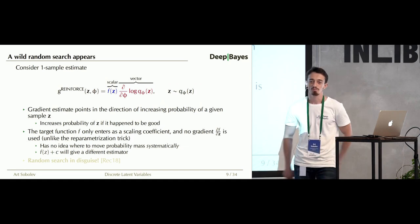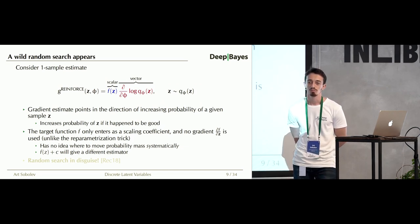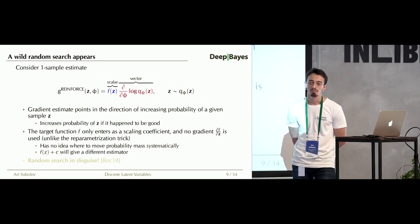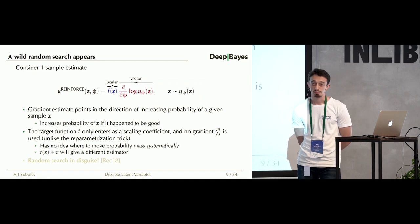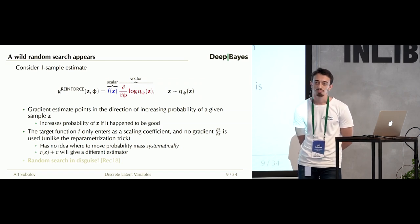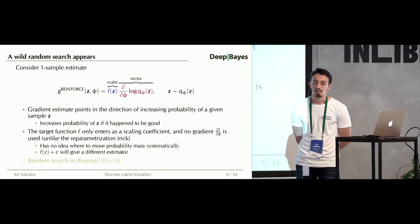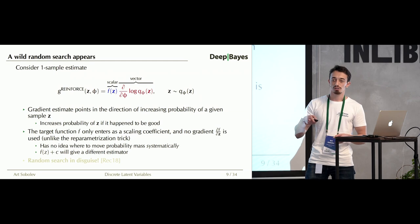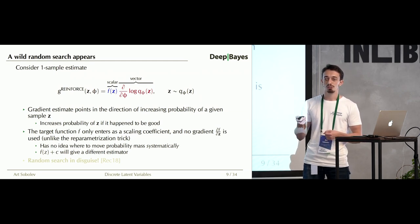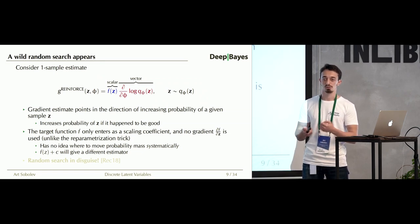A question was raised: when using REINFORCE in a VAE, we're not using the gradient of the decoder, right? Exactly — in the VAE case, f would be the log joint log p(x, z), and you would not be using the gradient of the decoder network, only its values.